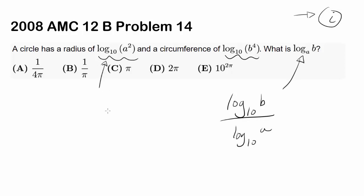Let's first look at log base 10 of A squared. Since we are raising A by second power, you can bring that out to become a constant. So we know 2 times log base 10 of A is the radius of the circle.